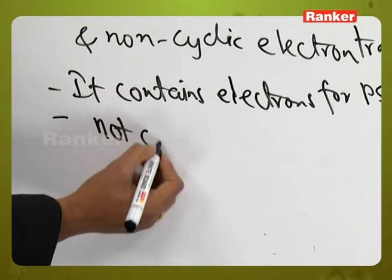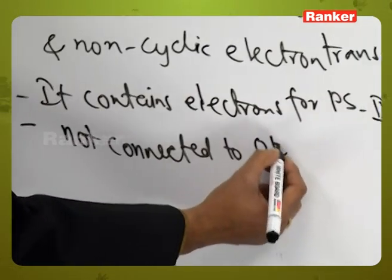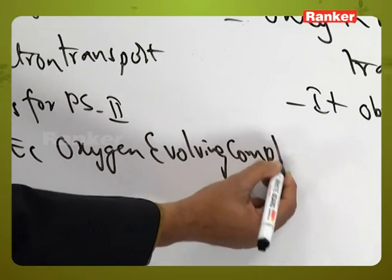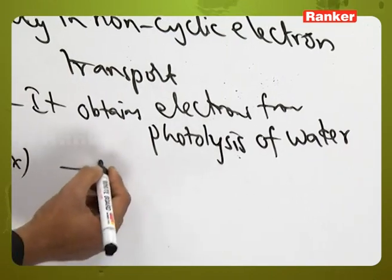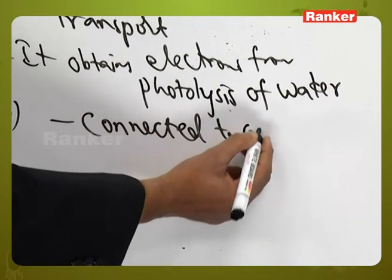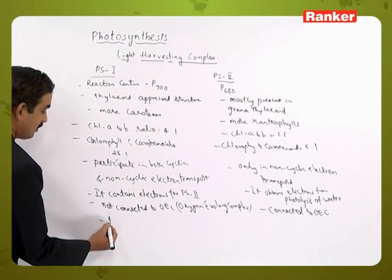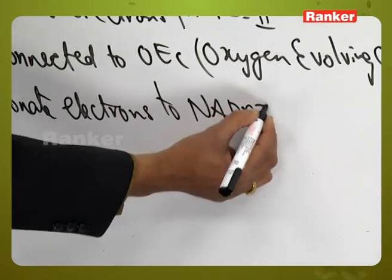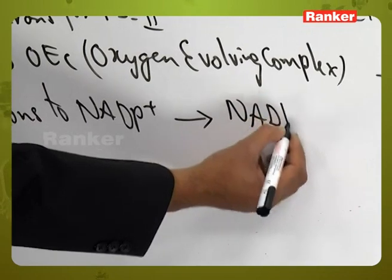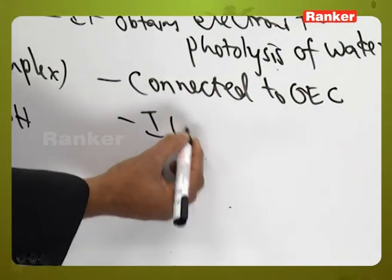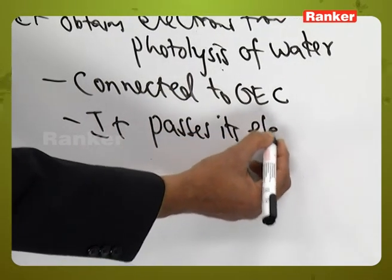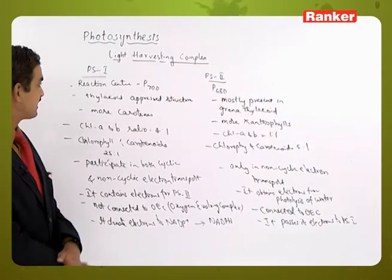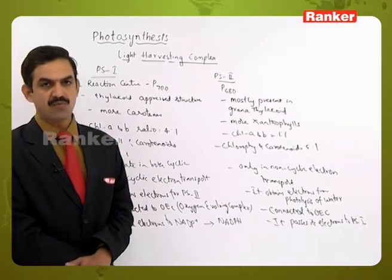PS1 is not connected to the OEC (oxygen evolving complex), whereas PS2 is connected to OEC through the photolysis of water. PS2 donates electrons to PS1, while PS1 donates electrons to NADP+, reducing it to NADPH. These are the key differences that can be observed between photosystem 1 and photosystem 2.